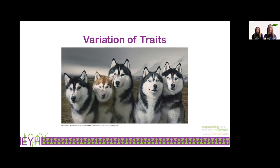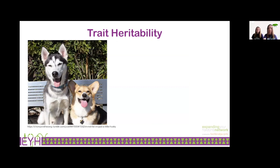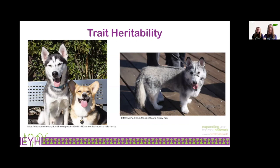But what happens if a husky and a corgi — another type of dog with very distinct traits — have puppies? The puppy would have traits that belong to each of its parents. Here you can see in this husky-corgi mix, it has the very distinct body shape of a corgi but the really unique coloration of a husky. This is a form of artificial selection, but it's a great example of how traits can be inherited.